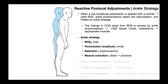The first is the base of support. In order to elicit an ankle strategy, the base of support has to be wide. It could be shoulder width apart or wider than that, but it can't be narrow. If the base of support is narrow, you're going to elicit a different strategy called a hip strategy. In order to elicit an ankle strategy, the base of support should be wide.